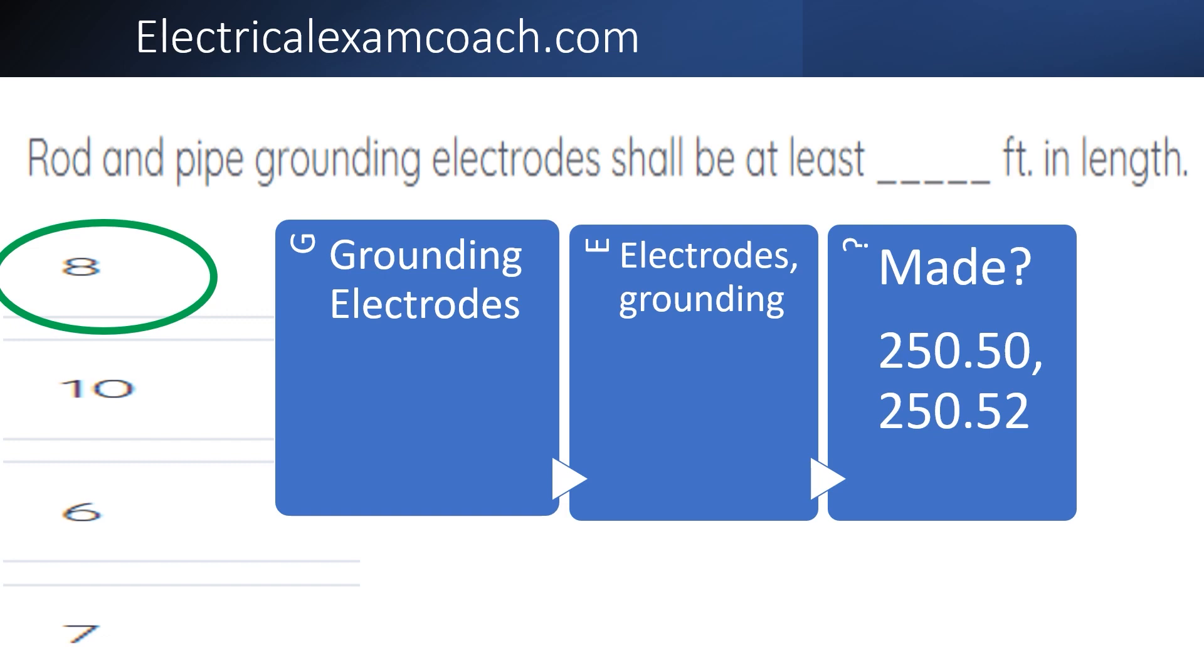So when we head to 250.50, we're going to start looking at our black bolt headings. Great. I feel like we're in the right section. And when we get to 250.52, we find exactly what we're looking for using our black bolt heading method until we find something about rods or pipes. Sure enough, when we get there, we find it and we find that it's required to be eight feet.